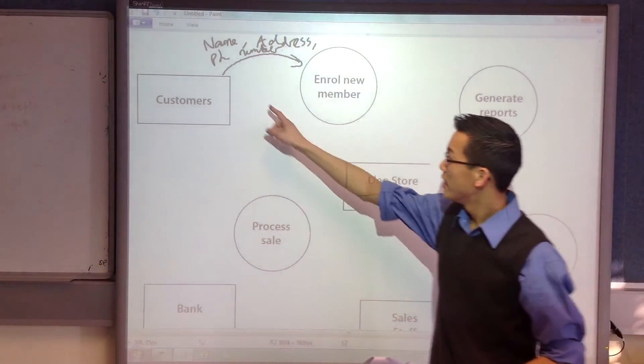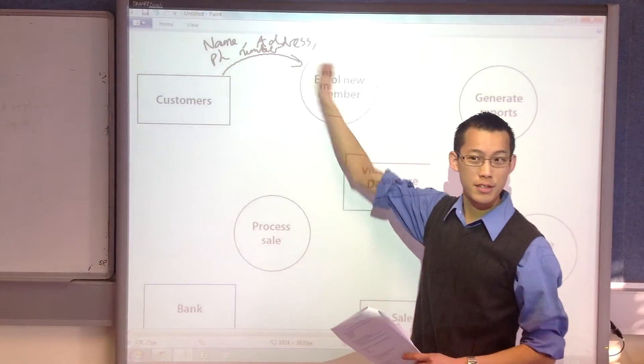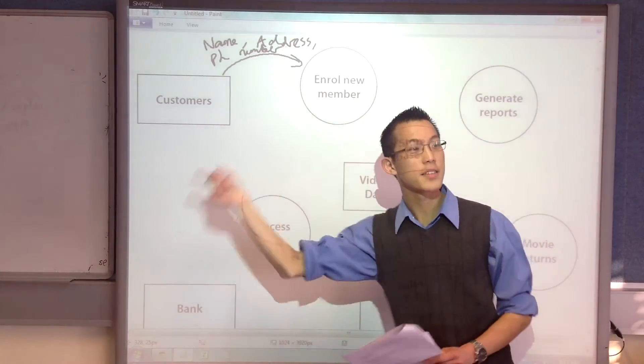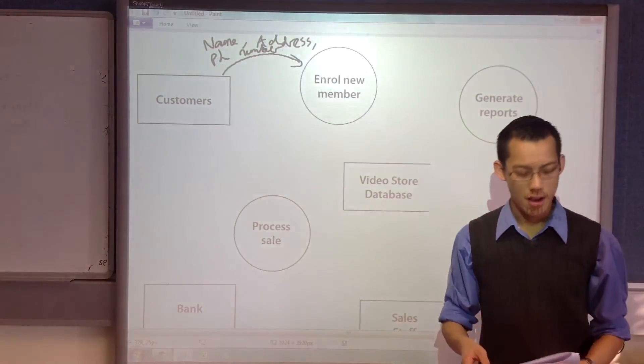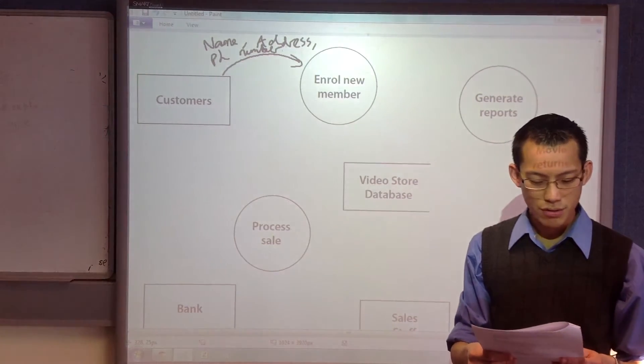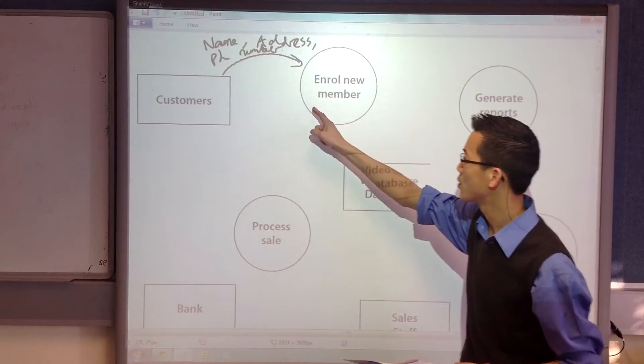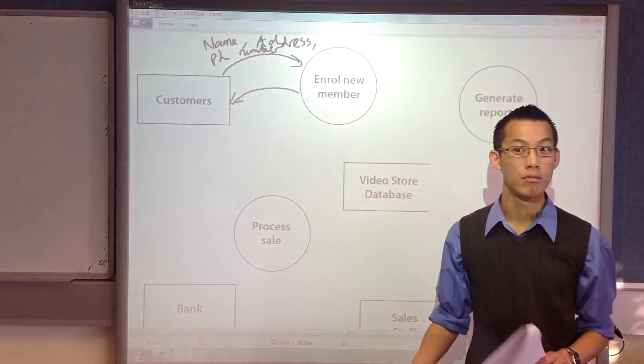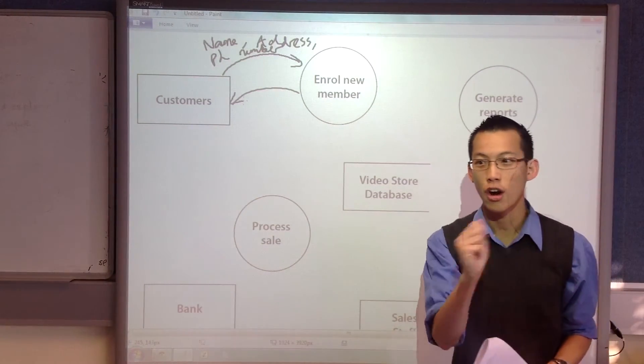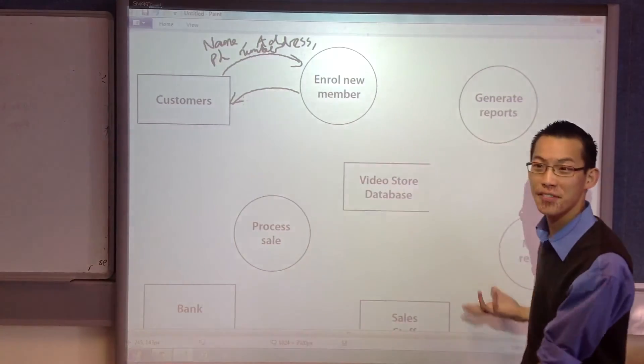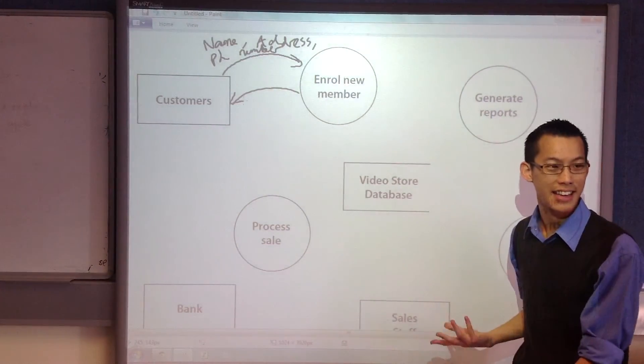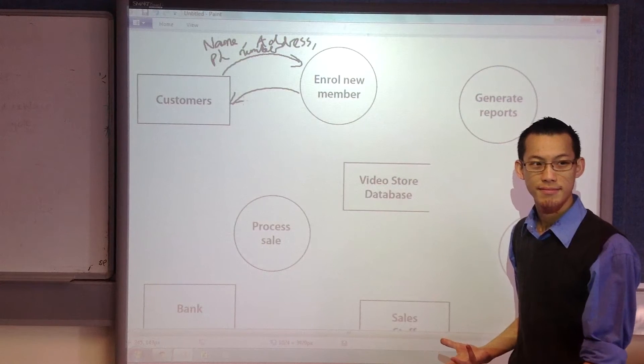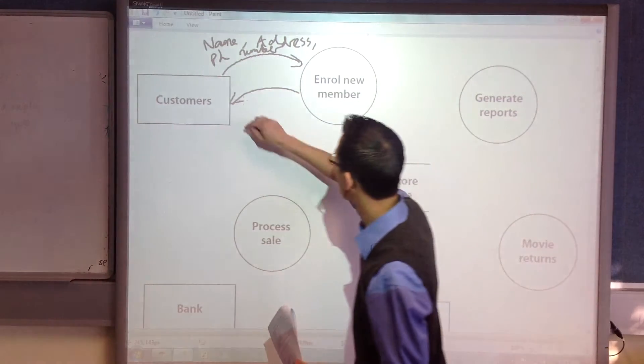Now, in the same way as data gets provided from the customers to this process, the process sends some data back to the customer, right? Think back to the question, what do you get out of this process? What does the customer receive after they enroll? And think, it's not an object, even though they get an object. This is just a data flow diagram. So what data do they get back? Yeah, that's right. Good. Well done.